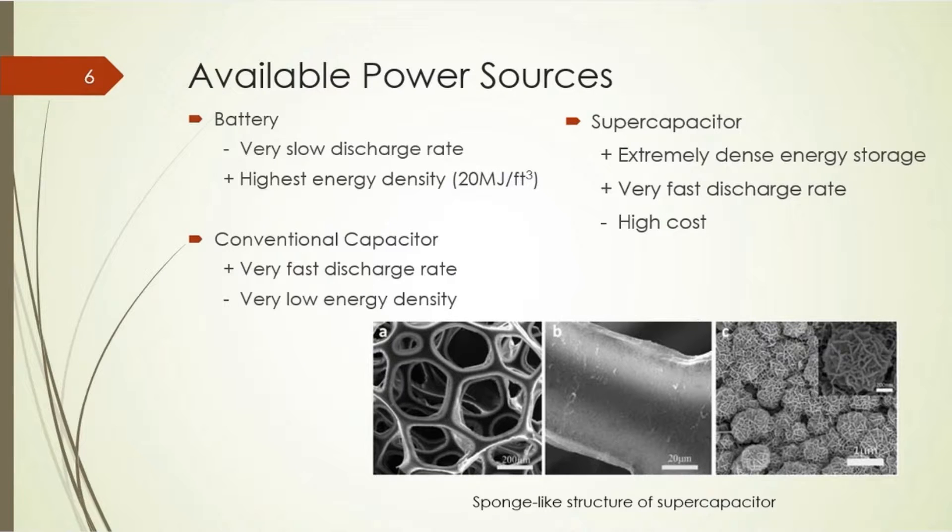So with an extremely powerful gun, we need a very powerful power source. Available in the laboratory: conventional batteries, conventional capacitors, as well as supercapacitors. Batteries offer a very slow discharge rate but are extremely energy dense. Capacitors have a very high discharge rate but have a very low energy density. Supercapacitors are much more expensive than either of the two options. Here's a picture of the sponge-like interior of the supercapacitor. With a smaller volume, it has an increased surface area.